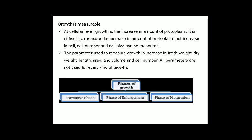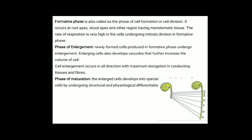There are three phases of growth: the formative phase, the phase of enlargement, and the phase of maturation. The formative phase, also known as the phase of cell division, occurs at root apex, shoot apex, and other regions having meristematic tissue; the rate of respiration is very high in cells undergoing mitosis. In the phase of enlargement, newly formed cells undergo enlargement, developing vacuoles that further increase the volume of the cell; cell enlargement occurs in all directions with maximum elongation in conducting tissue and fibers.